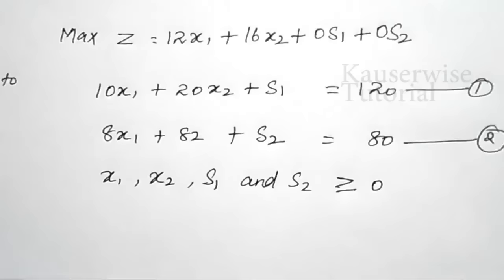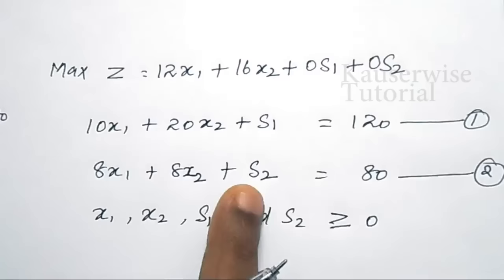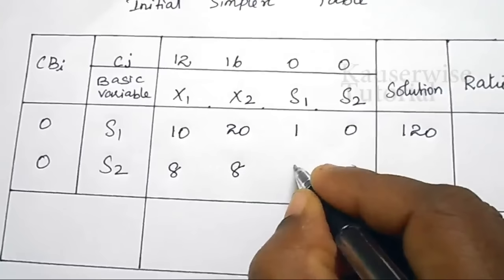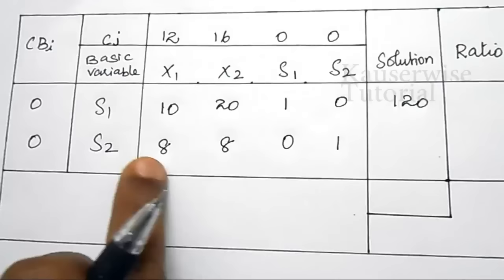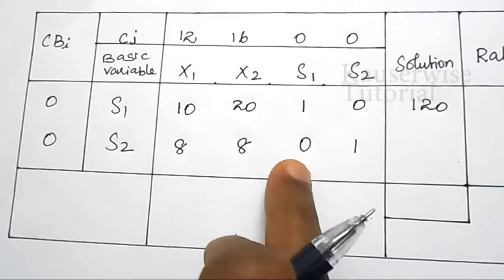For the second constraint, 8x1 plus 8x2 plus s2 equals 80. Here there is no s1 in the second constraint, so s1 value is 0 and s2 value is 1. The solution is 80.